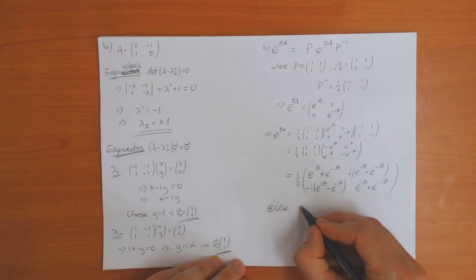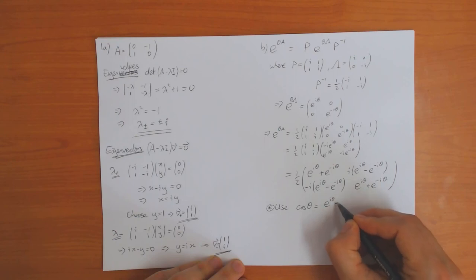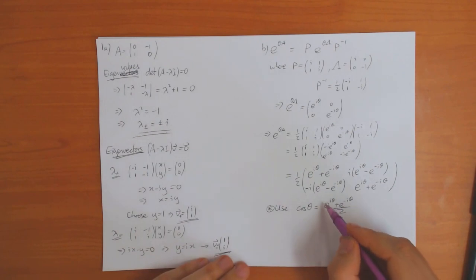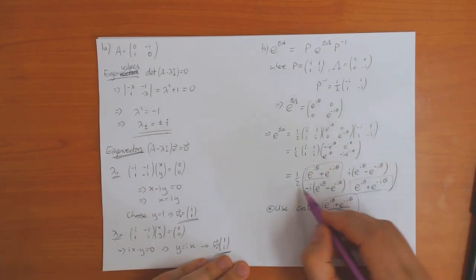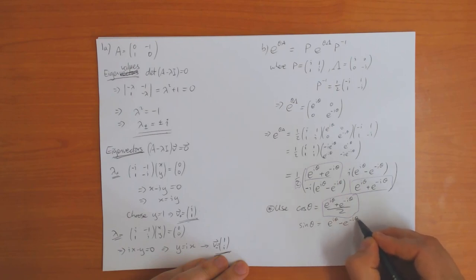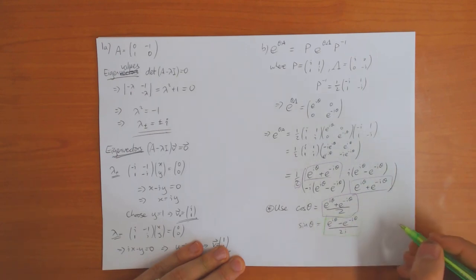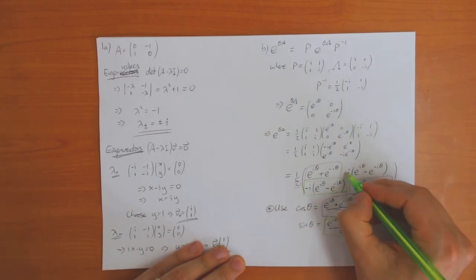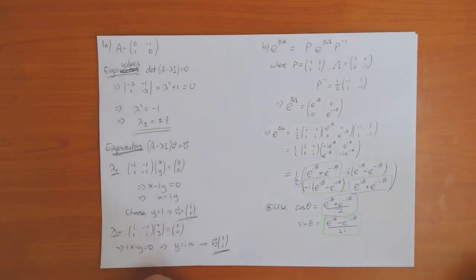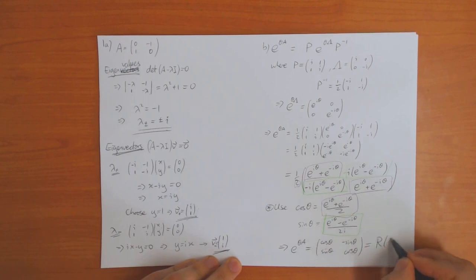Using the identities cos θ = (e^(iθ) + e^(−iθ))/2 and sin θ = (e^(iθ) − e^(−iθ))/(2i), and noting that 1/i = −i, this gives e^(θA) = [cos θ, −sin θ; sin θ, cos θ], which is the rotation matrix R(θ).